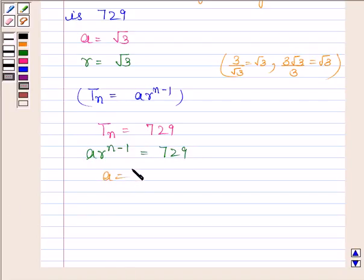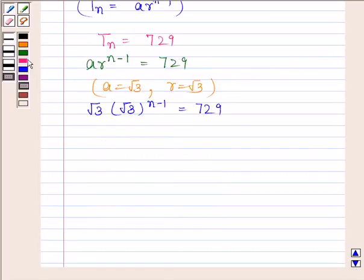Now, A is equal to root 3 and R is also equal to root 3. On substituting the values of A and R, we get root 3 into root 3 to the power N minus 1 is equal to 729. This implies root 3 to the power N is equal to 729, and this implies 3 to the power N by 2 is equal to 729.